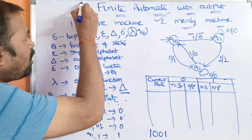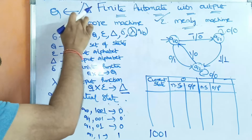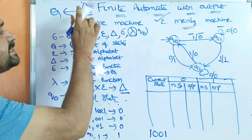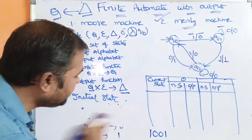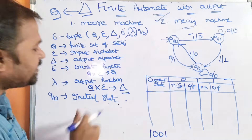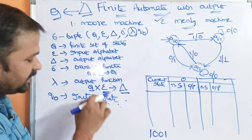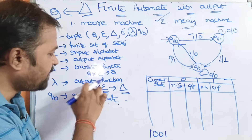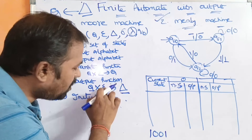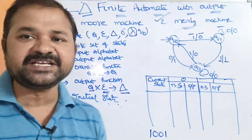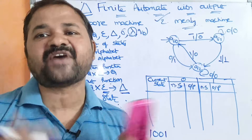In Moore machine, the output depends only on the present state. Whereas in Mealy machine, the output depends on the present state as well as the present input. Lambda is the output function which maps from Q cross sigma to delta (output alphabet). Q-naught is the initial state. Moore machine and Mealy machine don't have any final states.